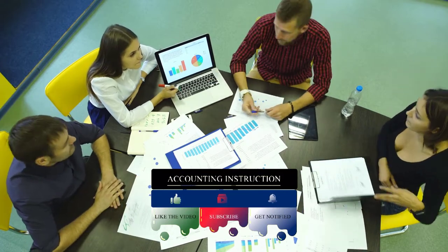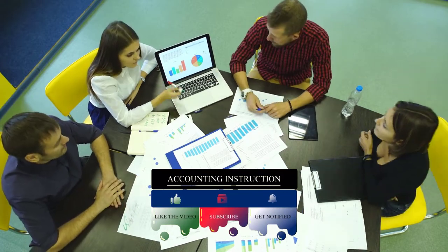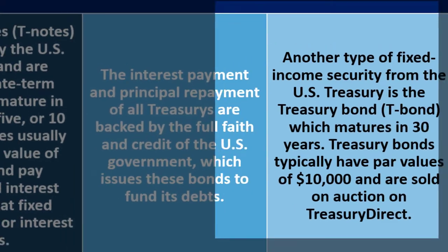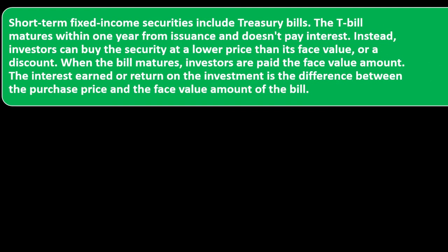Another type of fixed income security from the U.S. Treasury is the treasury bond — the T-bond — which matures in 30 years. Treasury bonds typically have par values of $10,000 and are sold on auction on TreasuryDirect.